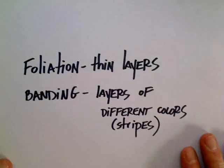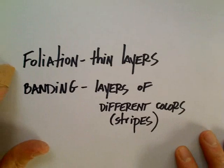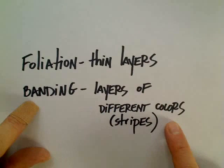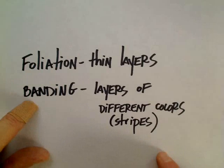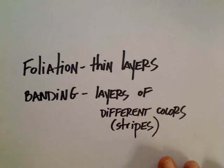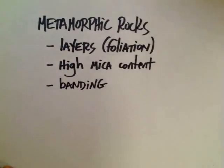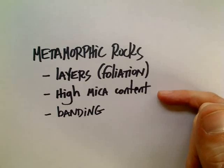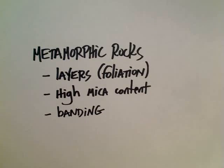Let's review. Metamorphic rocks often have some sort of layering. Foliation is your thin layers, and banding is extreme foliation — higher grade metamorphism showing layers of different colors or stripes where the colors kind of separate out. If you see either of those, that's a good indication you have a metamorphic rock. Also look for high mica content, because the chemical reactions that occur turn minerals into mica. I hope that helps — enjoy metamorphic rocks and all rocks. Have a good day.